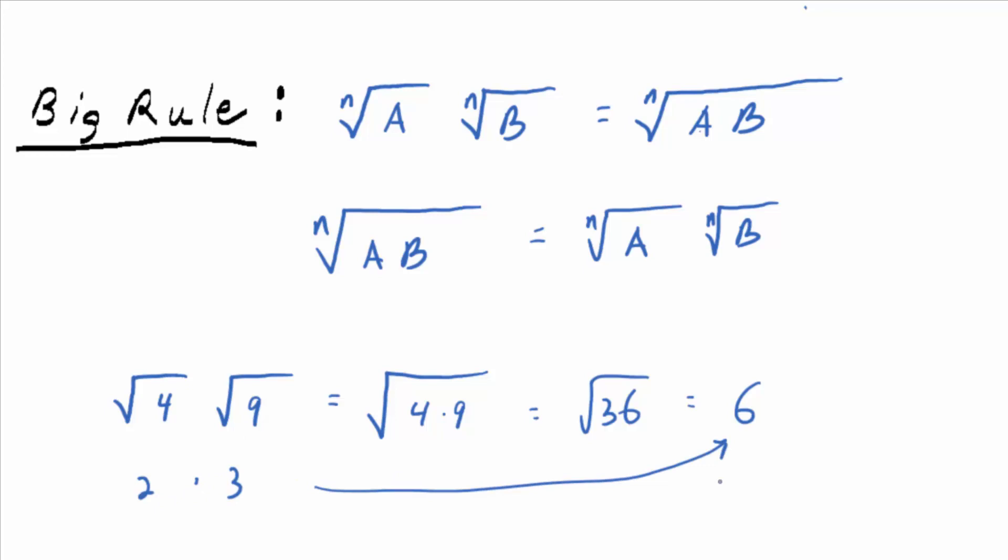So either way you look at it, whether you multiply the roots separately, or you look at them combined, you get six ultimately, don't you? So it helps you believe that rule. It's not, you can't prove a rule with one example, but it helps you believe it.